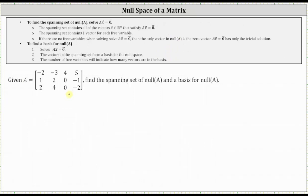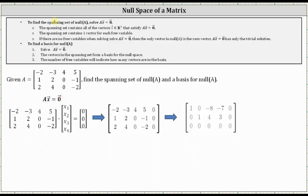Let's take a look at an example. We are given matrix A and asked to find the spanning set of the null space of A and a basis for the null space of A. We begin by setting up the equation matrix A times vector x equals the zero vector. Matrix A is a three by four matrix, so vector x must have four components, written as a four by one column matrix. The product is equal to a three by one matrix — the zero vector in R3. So vector x is in R4, and the zero vector on the right is in R3.